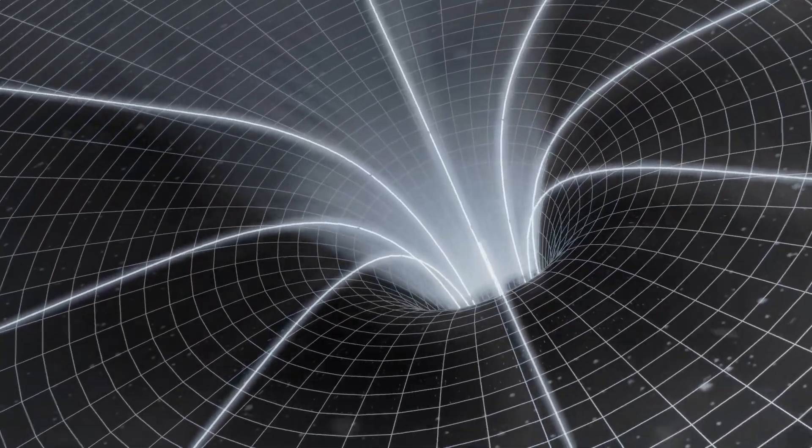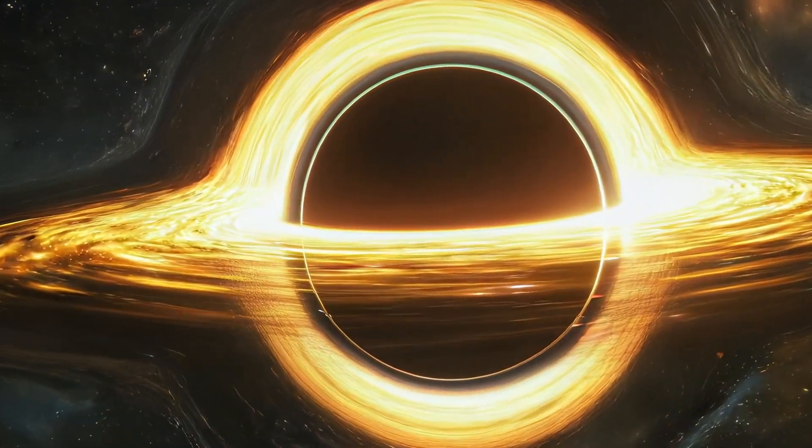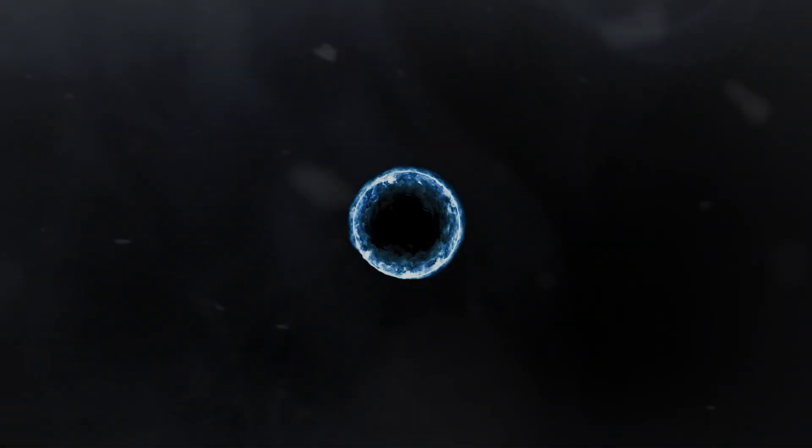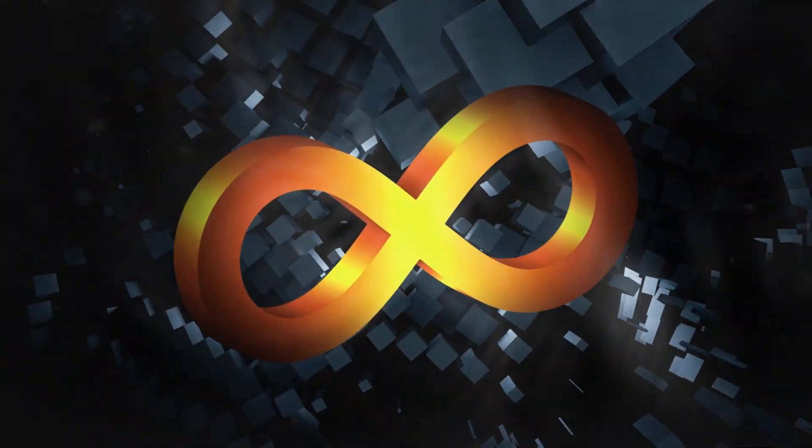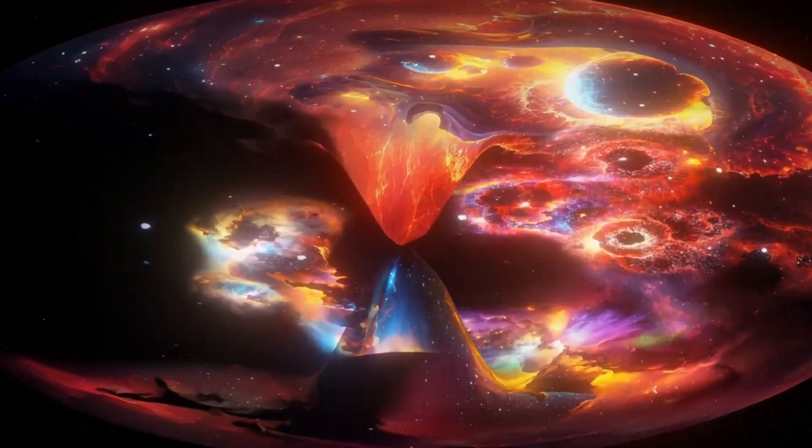According to classical general relativity, everything inside the event horizon is pulled to a single point, the singularity. This is where gravity becomes infinite, space-time curves infinitely, and all matter is crushed into zero volume.